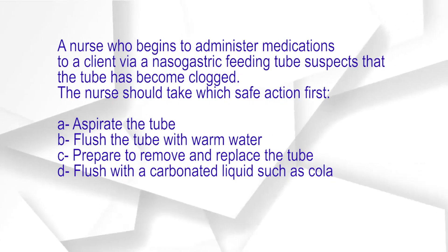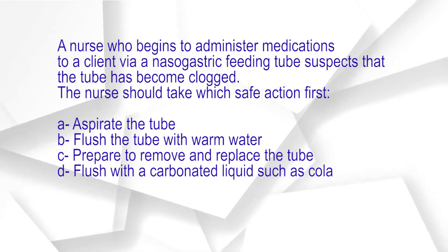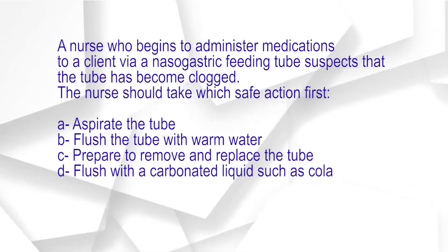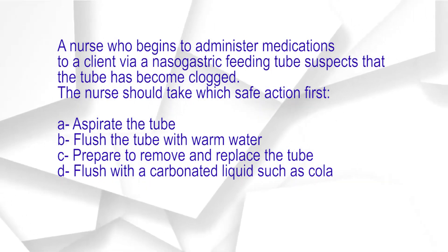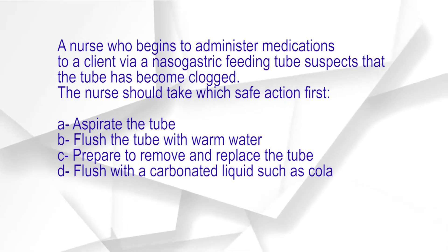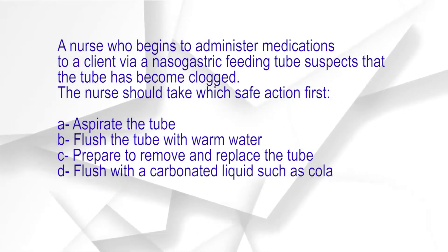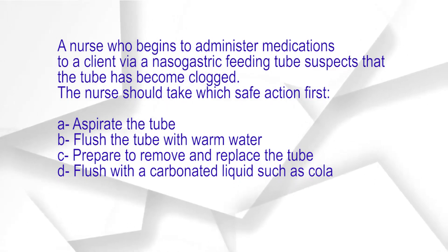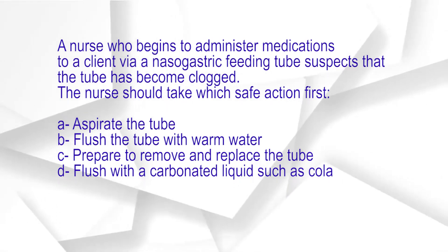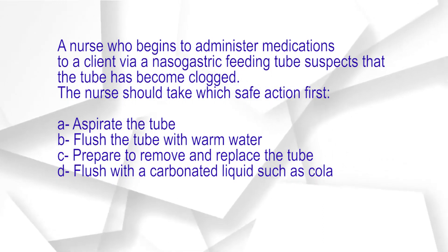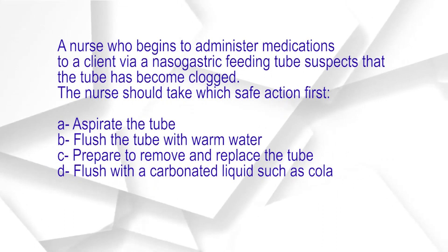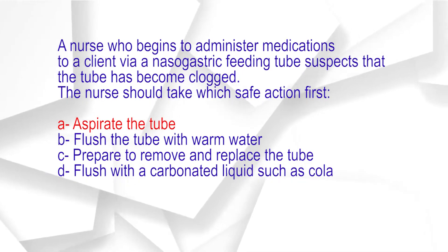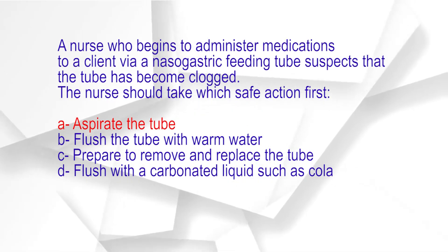A nurse who begins to administer medications to a client via a nasogastric feeding tube suspects that the tube has become clogged. The nurse should take which safe action first? A. Aspirate the tube. B. Flush the tube with warm water. C. Prepare to remove and replace the tube. D. Flush with a carbonated liquid such as cola. The correct answer is option A: Aspirate the tube.